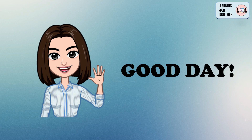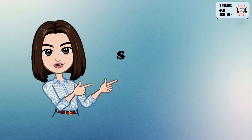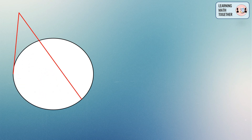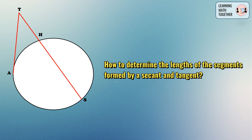Good day everyone. For today's video we will discuss the segments formed by a secant and tangent. Let us draw a circle with a tangent and a secant intersecting at one endpoint. Let's name the endpoint and the intersection points so we can determine the length of the segments formed.